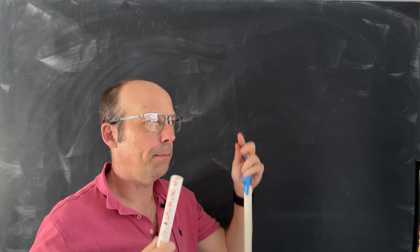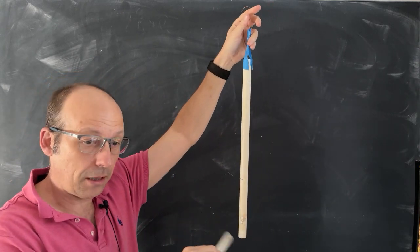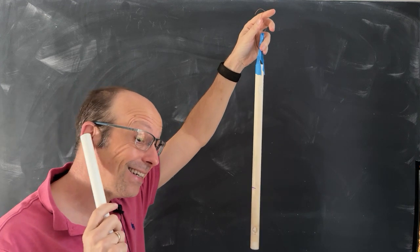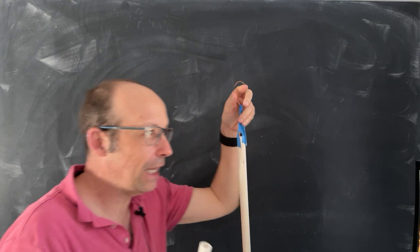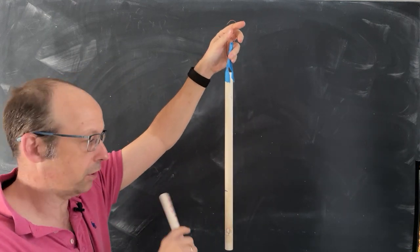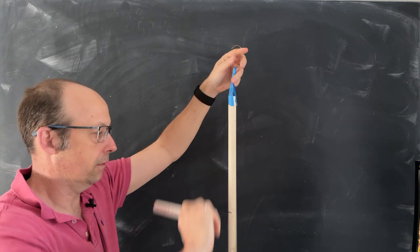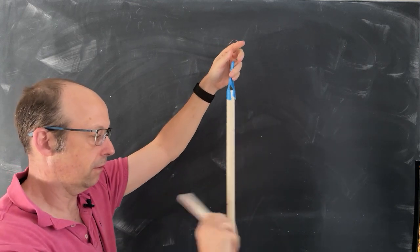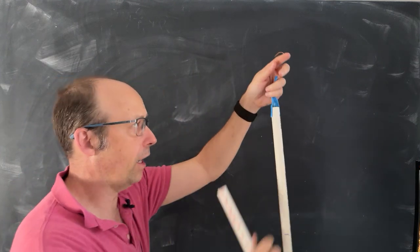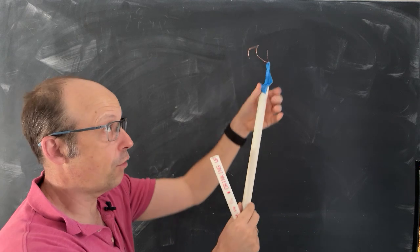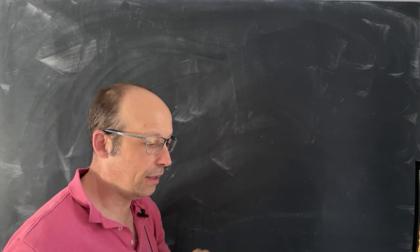Sometimes they call this the spot of percussion or something like that. I'm going to hit this down at the bottom — you hear a ringing sound. Now I'm going to hit it right at the sweet spot. That one actually did sound right. So when I hit it right there, it moves and rotates but this point is initially at rest. That's what we want to calculate: where do we hit it so that happens?